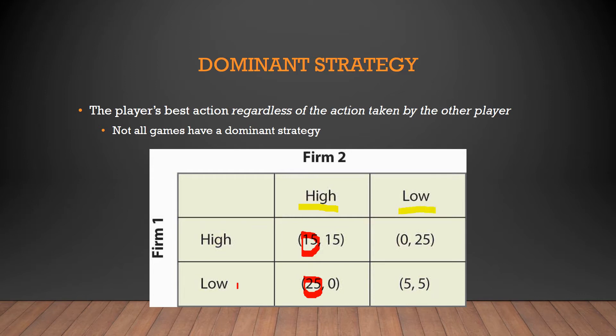If Firm 2 does the low strategy, what's going to happen? If they do low, Firm 1 does high, they get zero as their payoff. If Firm 1 does low, their payoff will be 5. Again, 5 is greater than 0, just like 25 is greater than 15. So what that means is that for Firm 1, they have a Dominant Strategy, and it is to do low output. Because either way, regardless of what Firm 2 does — whether Firm 2 does high or low — Firm 1 does better by taking the low output. So they have a Dominant Strategy.